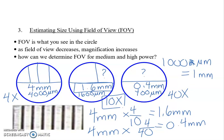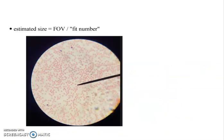So this is how we find the field of view. Now how are we going to estimate the size of something if we know the field of view? To find size, we take the field of view and divide by the fit number. The field of view is the diameter. This little pokey thing on the microscope allows us to show people what we're looking at. So ignore the pokey thing and look at the diameter.